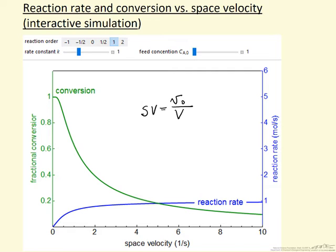A goes to B, this rate of formation of B. You can look at this as the flow rate of B leaving the reactor.